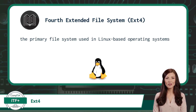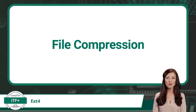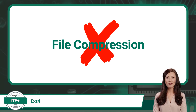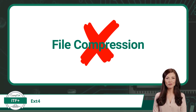Now that we know EXT4 is Linux's primary file system, let's quickly see which file system features it supports. Our first feature is File Compression. EXT4 does not natively support file compression as a built-in feature. However, it is possible to use external tools or compression utilities within the Linux environment to compress individual files or directories stored on an EXT4 file system, allowing users to save storage space and manage data efficiently.